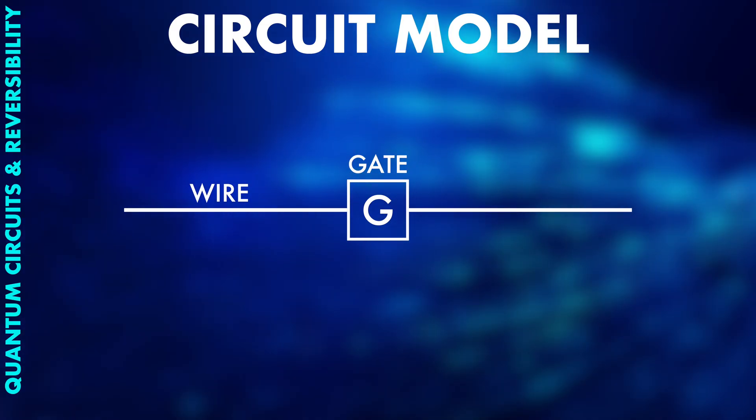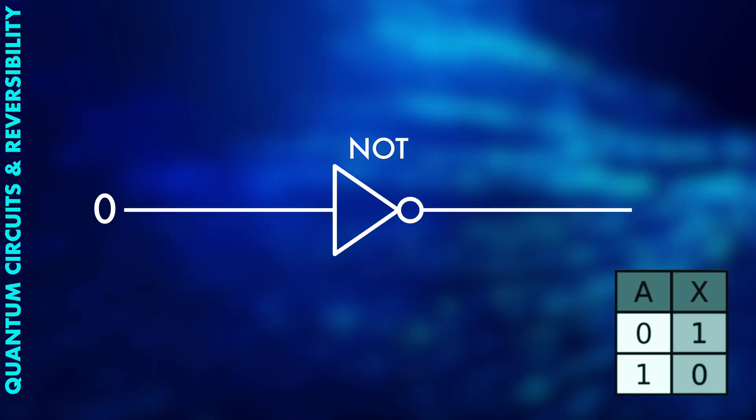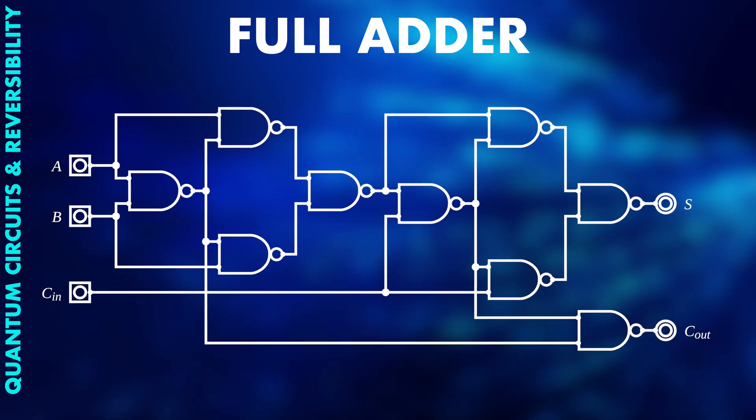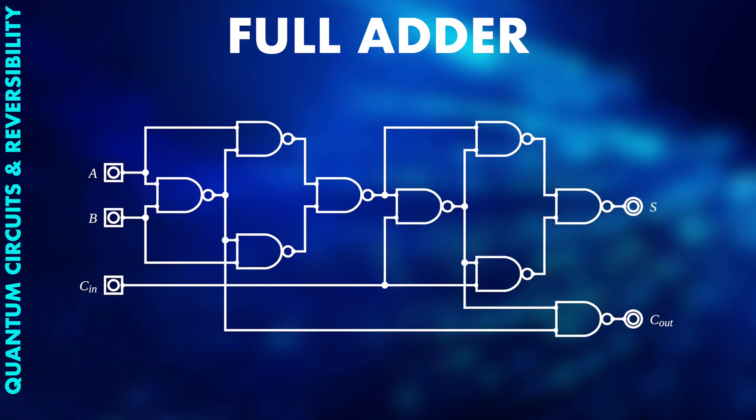For example, a NOT operation will simply invert the bit. It will change zero to one and one to zero. The full adder I showed in the intro is another example for a circuit.